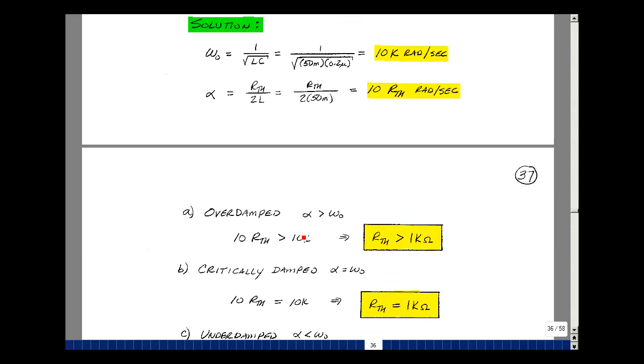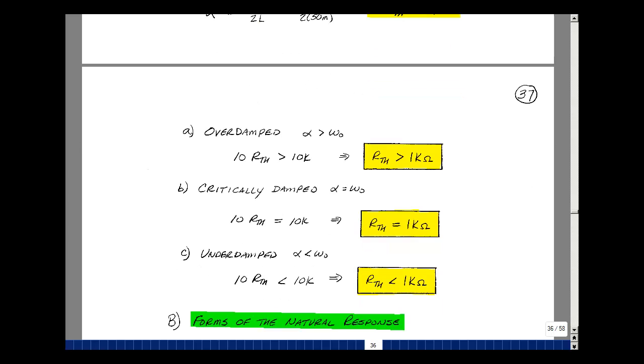To be over-damped, we need alpha to be greater than omega naught. In other words, 10 R thevenin needs to be greater than 10,000. R thevenin would be greater than 1,000 ohms. For the critically damped case, we have alpha equal omega naught. And that means that R thevenin would equal 1,000 ohms. And lastly, for the under-damped case, where alpha is less than omega naught, that would imply that R thevenin is less than 1k. And this is the form of the natural response of a series RLC circuit.